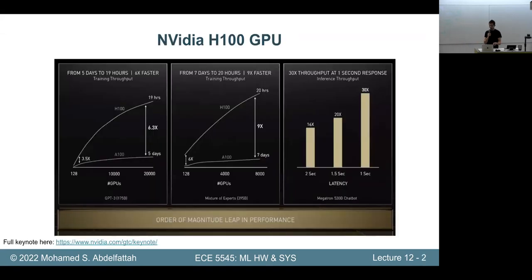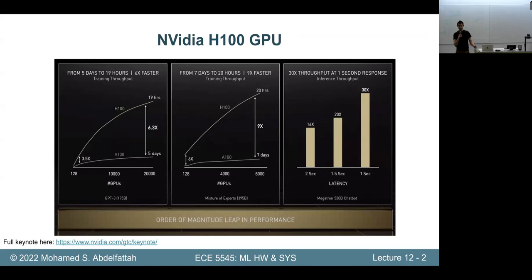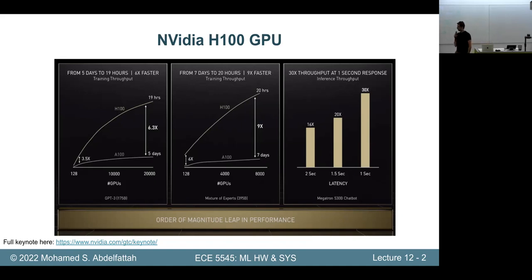Did anyone watch the NVIDIA keynote yesterday? That's kind of the Apple event for hardware engineers and machine learning engineers now. There's this new H100 architecture — Hopper is the generation after Ampere — and the graphs are really impressive.